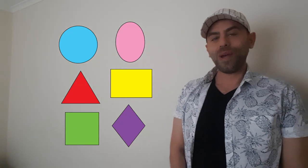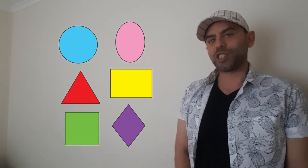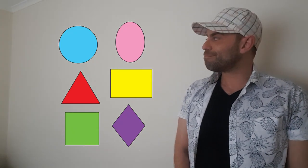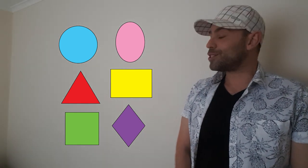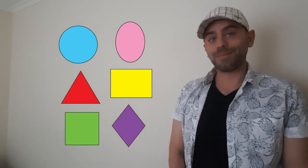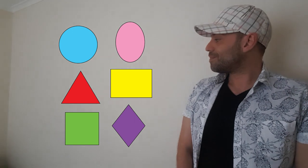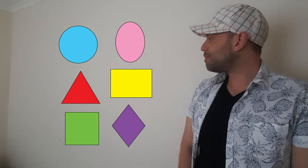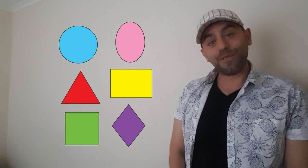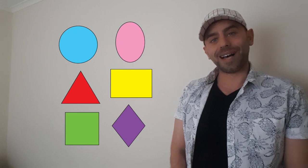Geometric shapes are simple shapes made up of straight or curved lines. We give geometric shapes names. A circle is round. A triangle has three sides. A rectangle has four sides. A square has four equal sides.